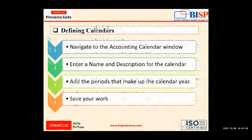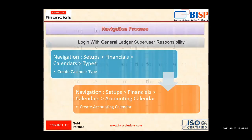After defining the period type, we will define the calendar. We navigate to the accounting calendar window and enter the name and description of the calendar, add the periods that make up the calendar, and save the work. The navigation is: log in with the General Ledger super user responsibility, then go to Setup > Financials > Calendar > Type to create a calendar type, and Setup > Financials > Calendar > Accounting Calendar to create the accounting calendar.